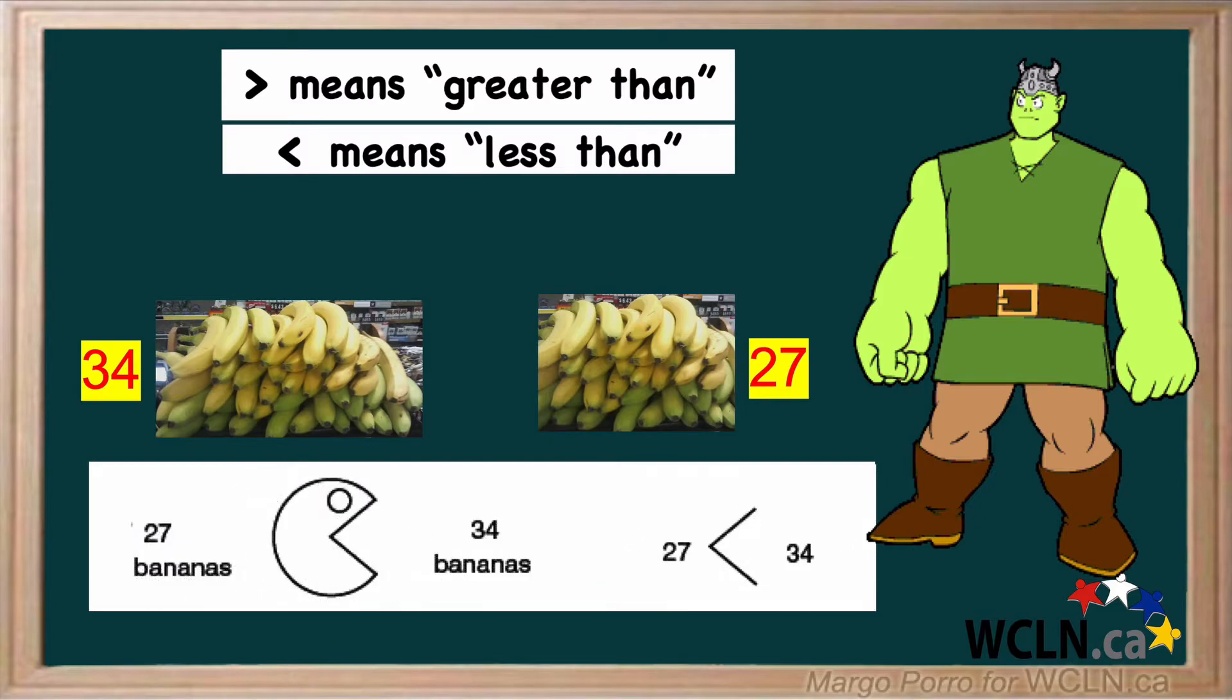If the numbers were written the other way, the mouth would still be pointing to 34 bananas. Place value works for any number.